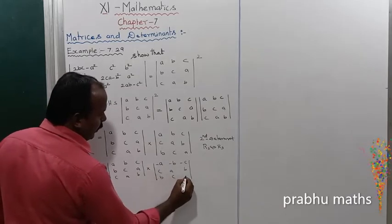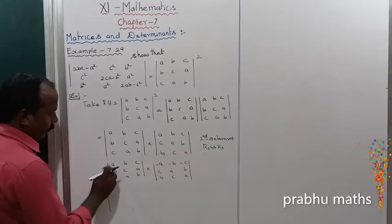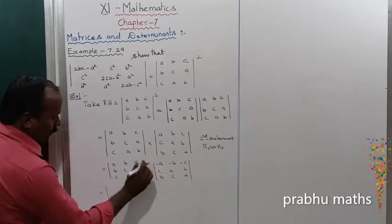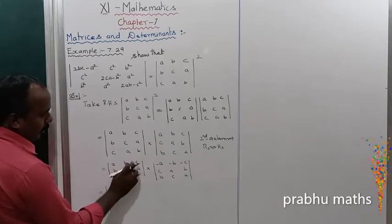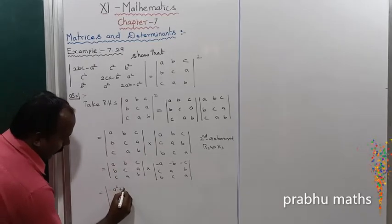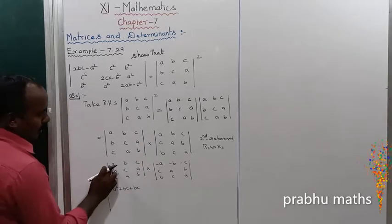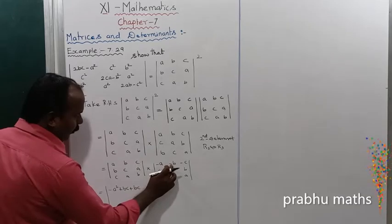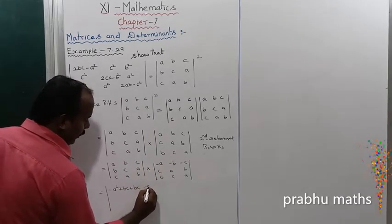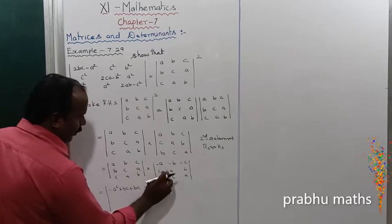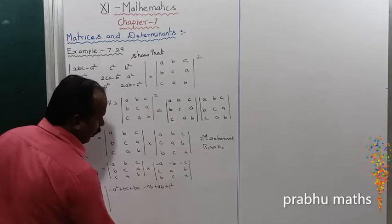Computing the matrix product elements: the first row, first column gives a·a minus a² plus bc plus bc, giving 2bc minus a². The first row, second column gives minus ab plus ab plus ab plus c², simplifying to c² terms. The first row, third column involves a·c, minus ac, giving remaining terms.